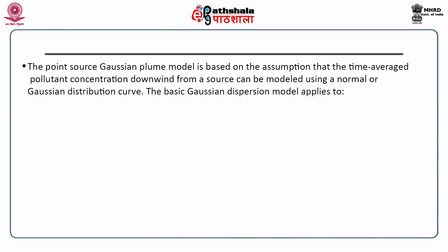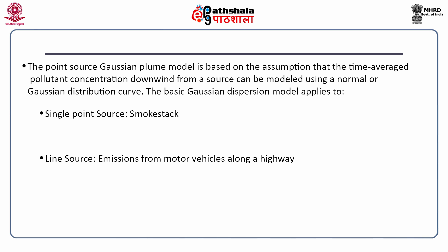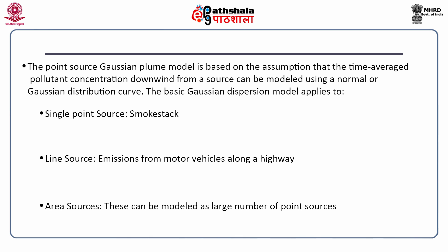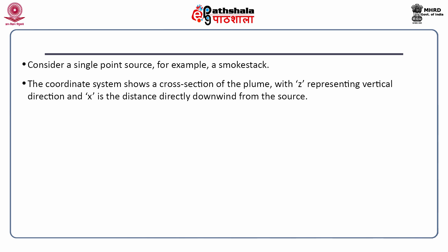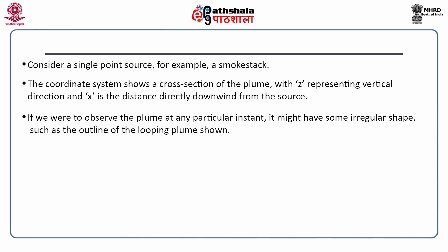The point source Gaussian plume model is based on the assumption that the time-averaged pollutant concentration downwind from a source can be modeled using a normal or Gaussian dispersion distribution curve. The basic Gaussian dispersion model applies to a single point source known as a smoke stack, line sources such as emissions from motor vehicles along a highway or emission from railways, and area sources, which can be modeled as a large number of point sources. Consider a single point source, for example a smoke stack. The coordinate system shows a cross section of the plume with z representing the vertical direction and x as the distance directly downwind from the source.